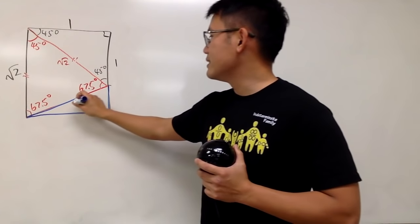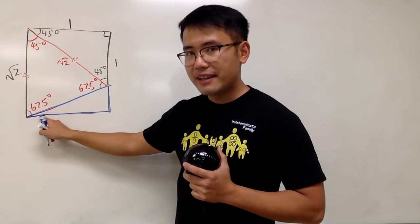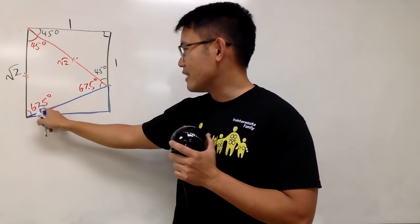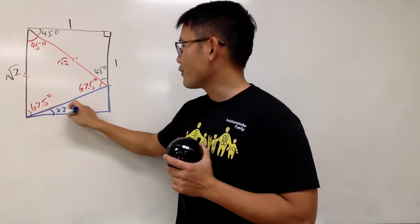And yes, you can see already. The whole thing here is 90. 90 minus 67.5 degrees is precisely 22.5 degrees.